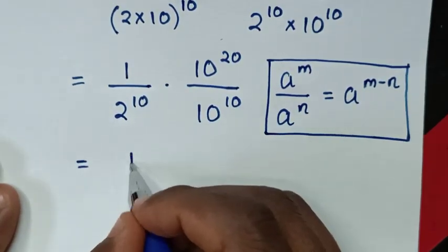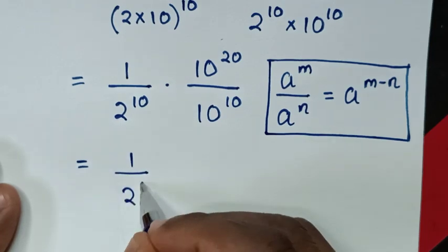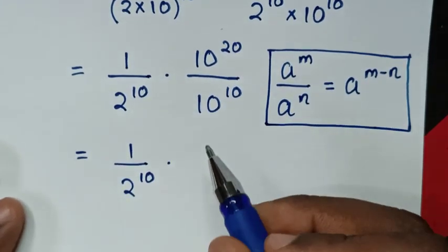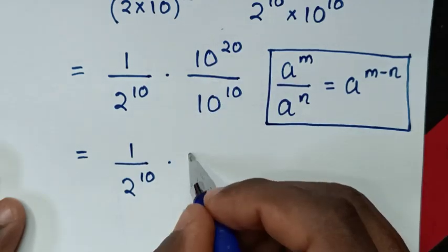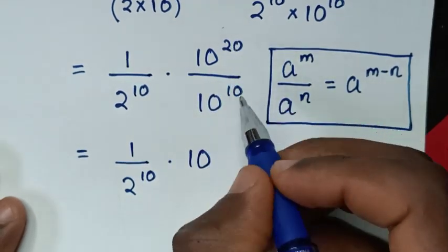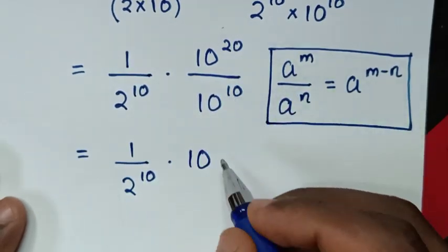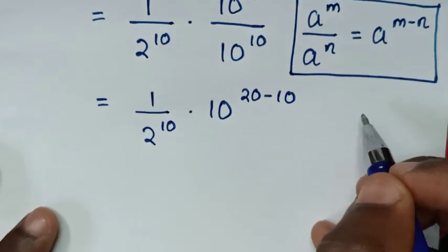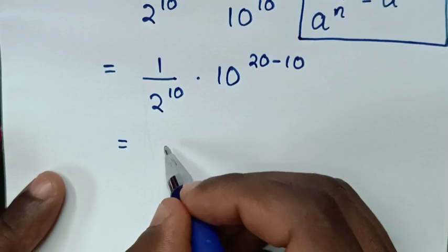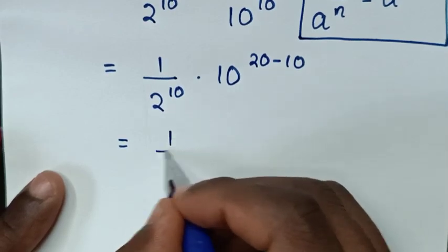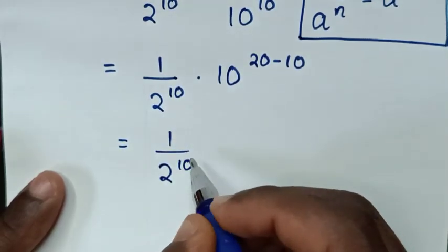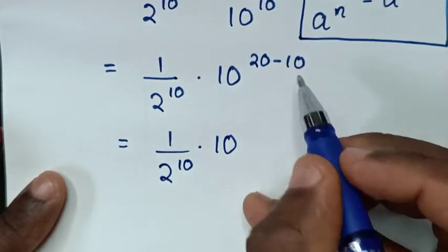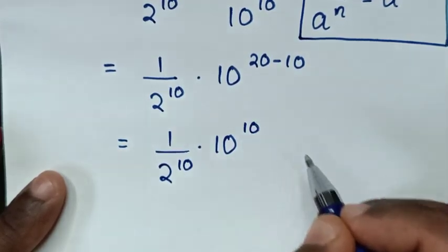So it will be equal to 1 over 2 power of 10, then times — in here it will be the same base of 10, power of 20 minus 10. Then it will be the same as 10 power of 10, and 10 power of 20 minus 10 is power of 10.